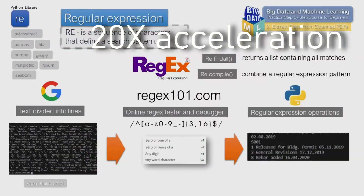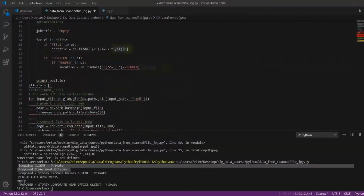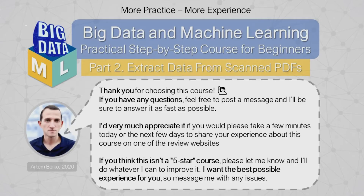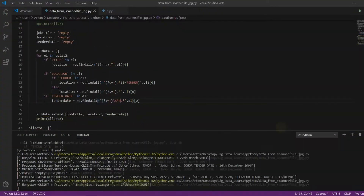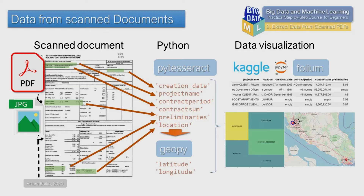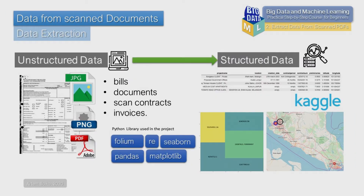We will work on real data. We will have two mini datasets consisting of PDF files that will be transformed to text and tabular form. We will visualize the received data on the Kaggle platform using Python libraries, which will help us depict our data in a graphical format.